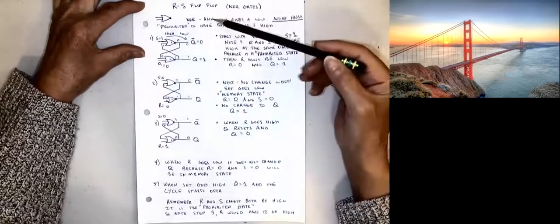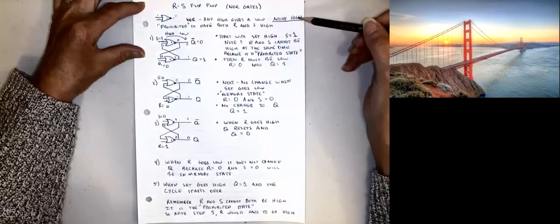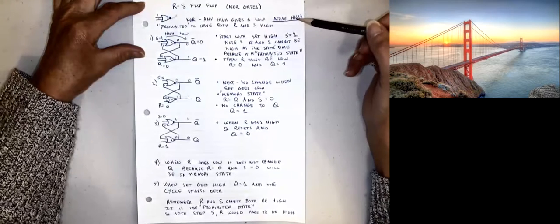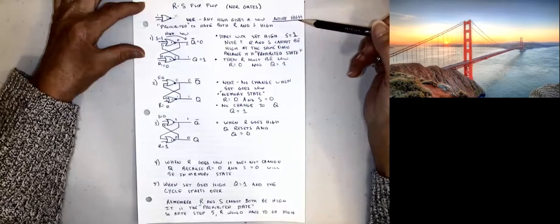The jingle to remember for the NOR gate is: any high gives a low. For example, if I have a high and a low on the inputs, we would have a high inside because it's an OR gate, and then our output would be a low. So either one of those highs gives us a low. We call this active high, and because of that we can't have both R and S as highs — that's called the prohibited state, and that flip-flop would not work as expected.